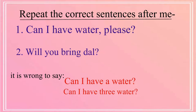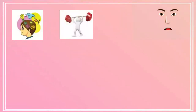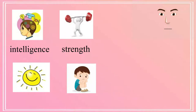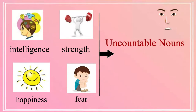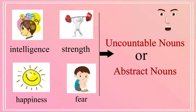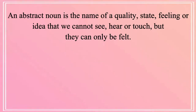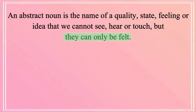Did you know that qualities like intelligence and strength, and feelings like happiness and fear, are also uncountable nouns? They are also called abstract nouns. An abstract noun is the name of a quality, state, feeling, or idea that we cannot see, hear, or touch — they can only be felt.